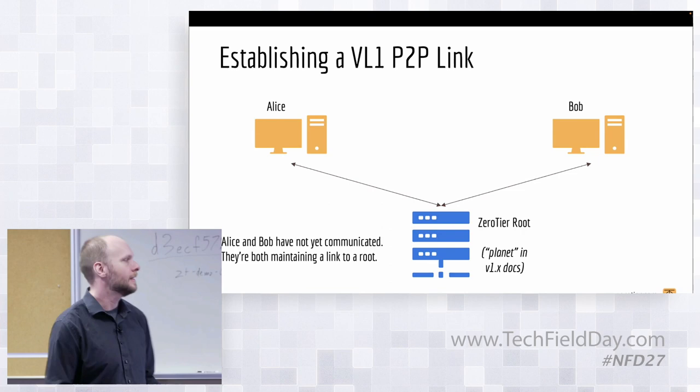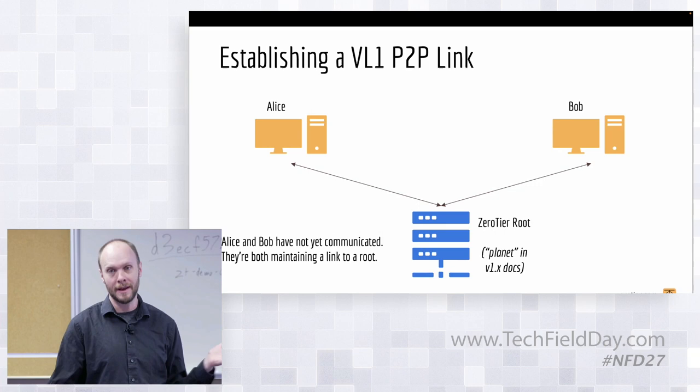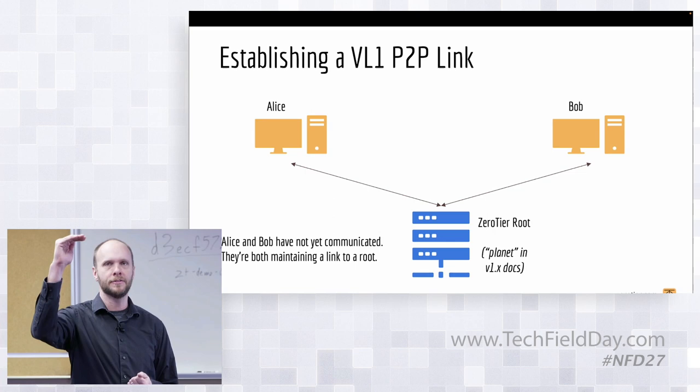Alice maintains a connection to roots. Bob maintains a connection to roots. Alice sends a message to Bob. She looks up Bob's public key from his address. She can do that. Roots also cache keys. And then she can make a packet, encrypt it, address it, and send it. She has nowhere to send it, so she sends it to the root. The root sends it to Bob. Great. Now they're talking. And this is why when you start using ZeroTier, if you ping, it works right away. And then you'll see the latency drop.